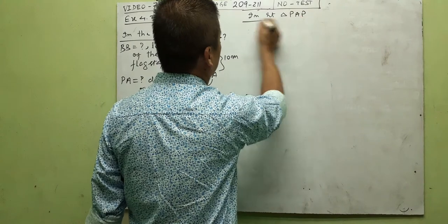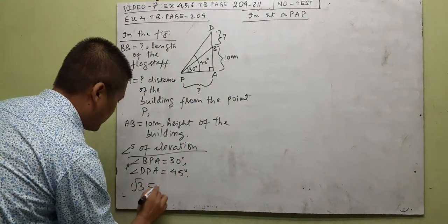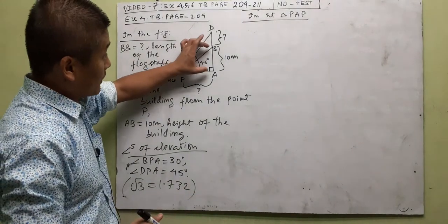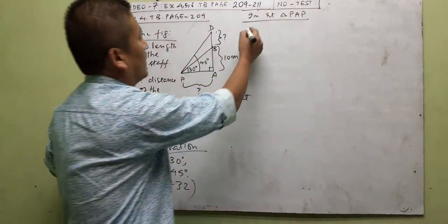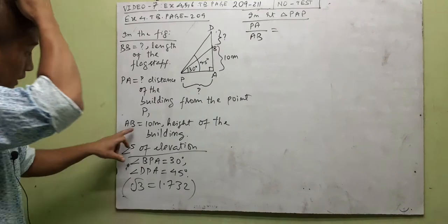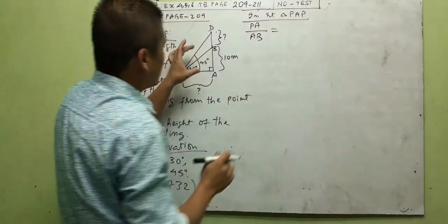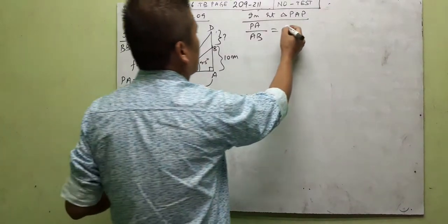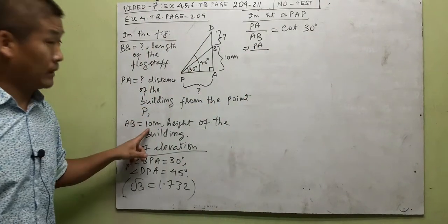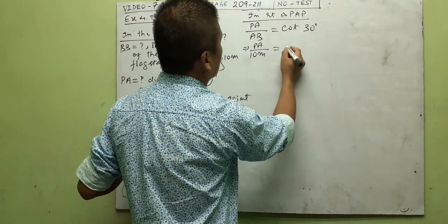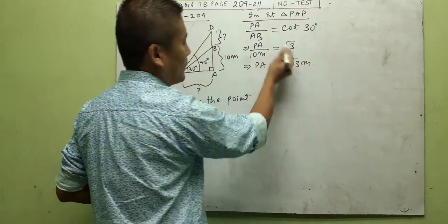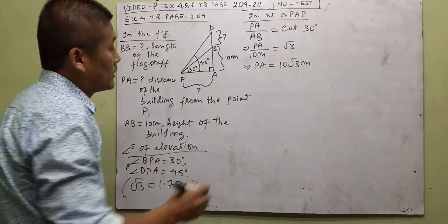They say take root 3 as 1.732 — keep that in mind. BA is known as 10 meters. We want to find PA first. PA is adjacent, AB is opposite, so we use cot. The angle is 30 degrees, so PA divided by AB equals cot 30, which is root 3. Therefore PA equals 10 root 3 meters. Let's keep that as equation number one.